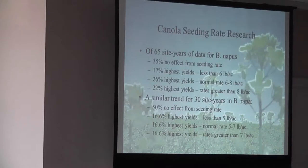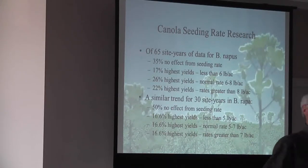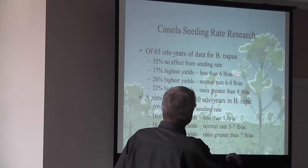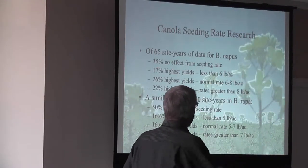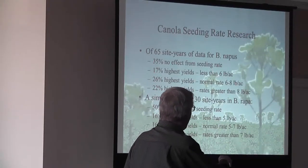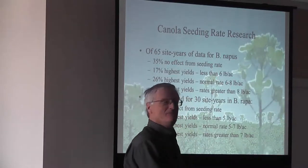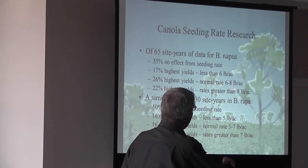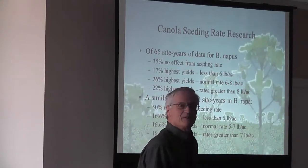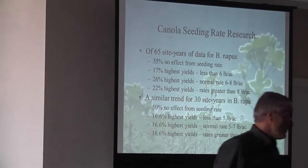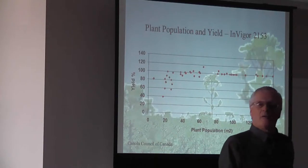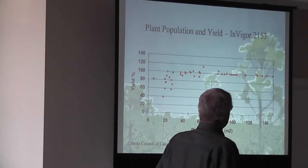When we look at all the research work that's done, it really doesn't show much difference. 65 station years of data for Argentine. There was no effect in 35% of those trials. And then we just basically have, if you ran at 6, it was the highest. 17% of the time it was there. And at 6 to 8 pounds, and even at more than 8 pounds, 22%. So it's very flexible. Don't worry about your seeding rate until you get into very low numbers. This is some of the Canola Council's research work that was done. Guys like Nick Underwood. And they carried out a huge number of trials across Western Canada. Using this one variety. And you can see where the cutoff line is. About 4 plants per square foot is the bottom end. That's the critical level. You start getting into much lower than that. And you start seeing potential for loss in yield.